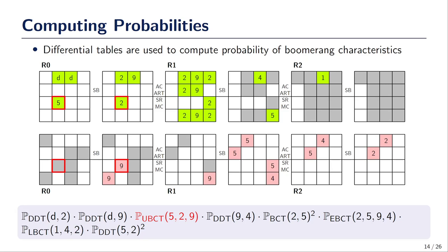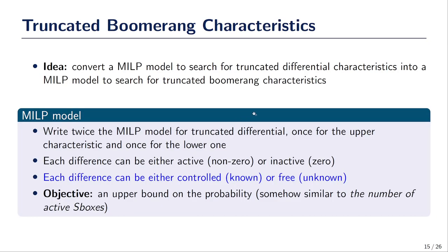What is very important here is that knowing which table will be used for the probability computation only depends on a few parameters. First, we need to know whether differences are set to specific values or if they are free. And if they are set to specific values, then we need to know whether this value is zero or if it's a non-zero value. That's all we need to know which table will be used in the computation of the probability. This helps us to derive a new model to search for truncated Boomerang characteristics.